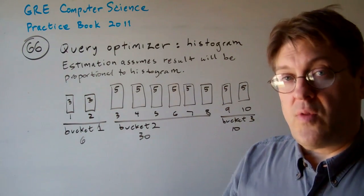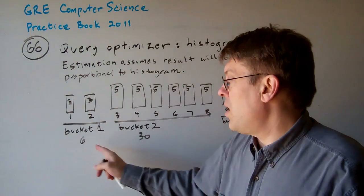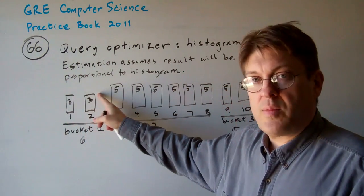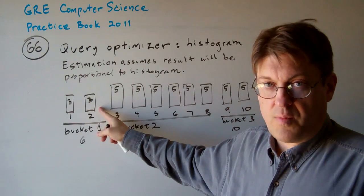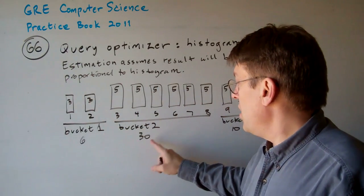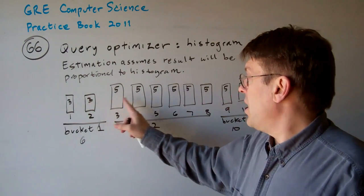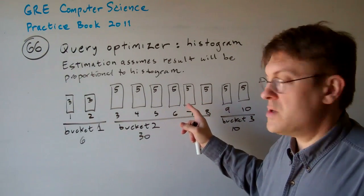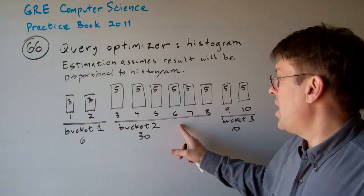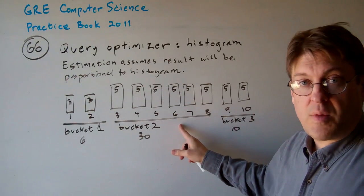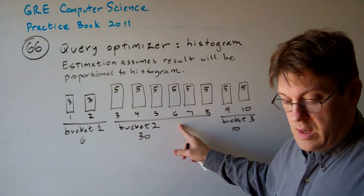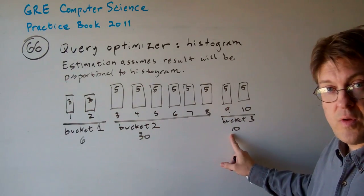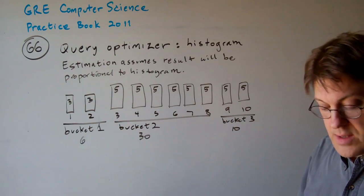Using a uniform distribution: in bucket 1 we have 6 tuples, which means 3 tuples for attribute 1 and 3 tuples for attribute 2. Bucket 2 has 30 tuples, meaning 5 tuples per attribute across the 6 items (3 through 8). Bucket 3 has 10 tuples associated with it, which is 5 apiece for attributes 9 and 10.